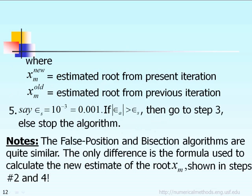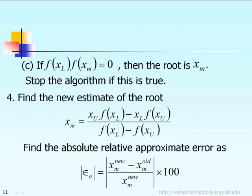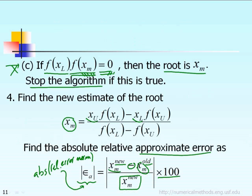This is the absolute relative error norm that we just computed. We compare it with epsilon sub s, which is the user-specified error tolerance. If epsilon_a is greater than the small tolerance, it means the iteration process has not converged yet, and we have to go back to step number 3. Going back to step number 3 means: now we have the new lower bound and upper bound, we have to make the IF check again to see if we belong to case A, case 3B, or case 3C. The procedure is repeated that way.